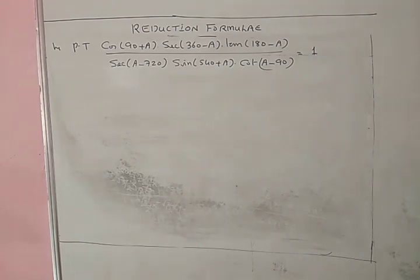sec(minus 720): 720 equals 0, so this is simply sec. Now find sin(540 + A), and cot(A - 90), whose value was found in the previous problem.